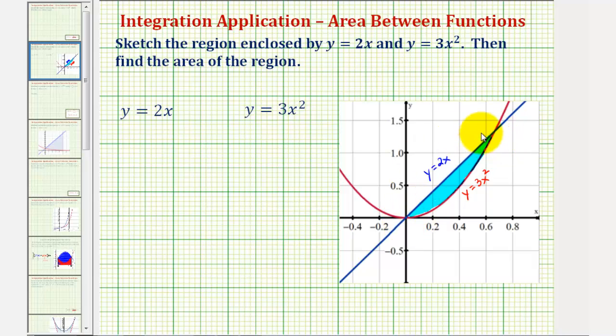To find these x values, we'll solve this as a system of equations and we'll solve this using substitution, where if y equals 2x and y equals 3x squared, then 2x must equal 3x squared.